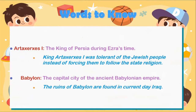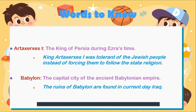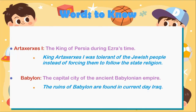Let's look at the words to know. It's a long name but if we break it up it's not too hard — Artaxerxes. He was a king of Persia during Ezra's time. Ezra, who we're going to be talking about, is a prophet. Persia — if you look on a map you don't see Persia these days because Persia became Iran. King Artaxerxes was tolerant of the Jewish people instead of forcing them to follow the state religion. The second word is Babylon — the capital city of the ancient Babylonian empire, whose ruins are found in current-day Iraq.